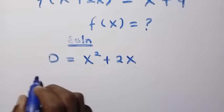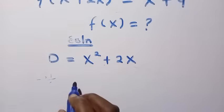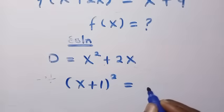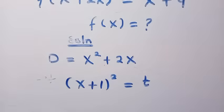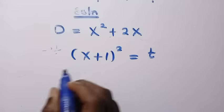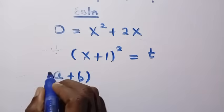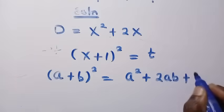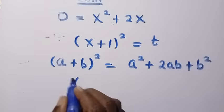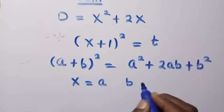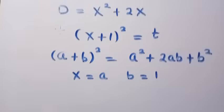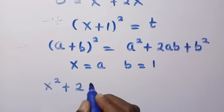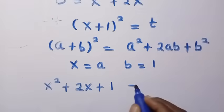So what we do here is let x plus 1 squared equal t. By expanding (x+1)² using the identity (a+b)² = a² + 2ab + b², where a equals x and b equals 1, we get x squared plus 2x plus 1 equals t.